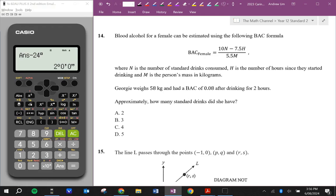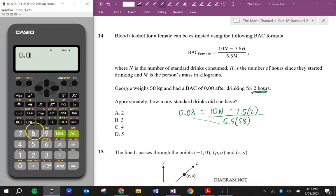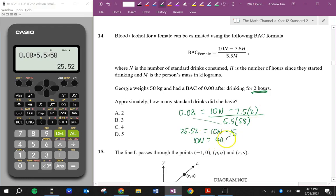Blood alcohol for a female can be estimated using the following BAC formula. Georgie weighs 58 kilograms and had a BAC of 0.08 after drinking for 2 hours. Approximately how many standard drinks did she have? So BAC of 0.08. We want to work out N, the number of standard drinks. H is 2 for 2 hours. And her mass is 58. So now I'm just going to multiply these two together to get rid of that fraction. 0.08 times 5.5 times 58 is 25.52. I'm now going to add 15 to both sides. So that's going to give me 40.52. And so we can now divide by 10. 4.052. So about 4 standard drinks.